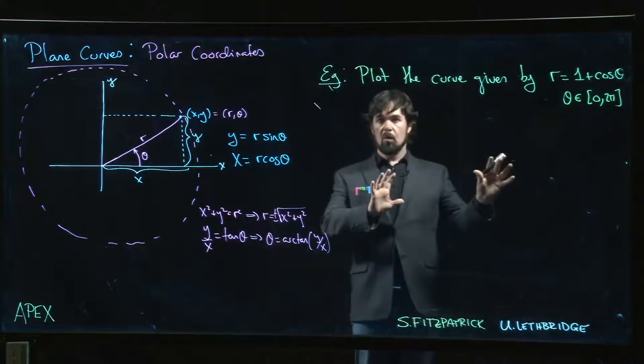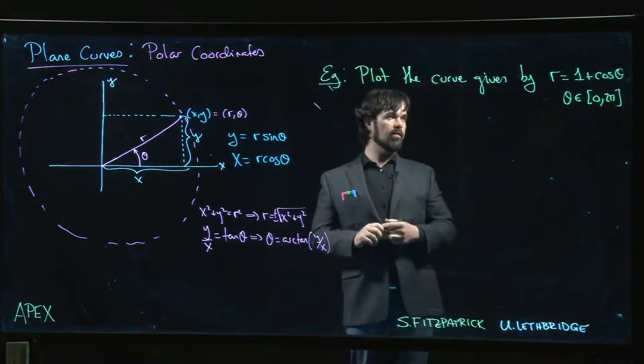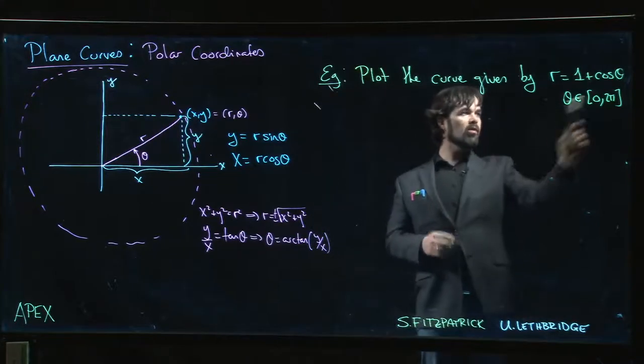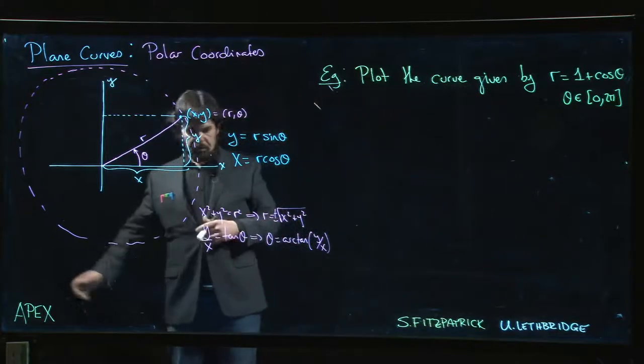So this time we'll look at a more challenging curve sketching problem. We've got a polar curve defined by the equation r is equal to 1 plus cos theta. Typically this is how polar curves are presented, often in this form r is some function of theta.